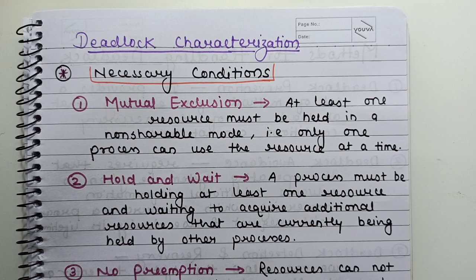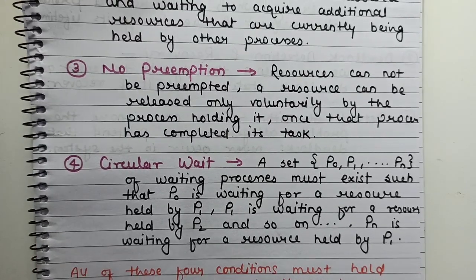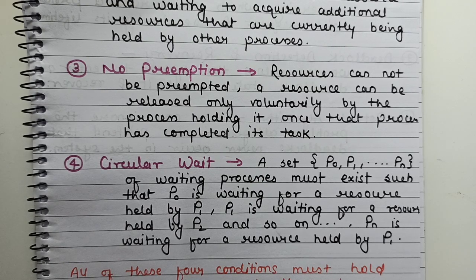The next condition is no preemption. No preemption means that if a resource has been allocated to a process, it cannot be preempted or taken away by any other process or the operating system. It can only be released voluntarily by the process holding it. If the process releases it voluntarily that is fine, but if it does not, you will have a problem.